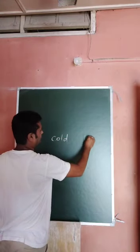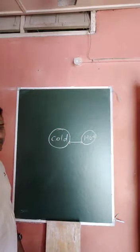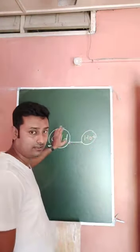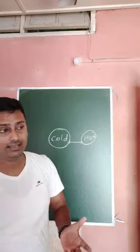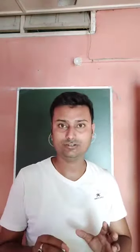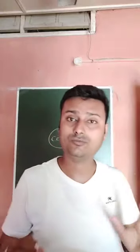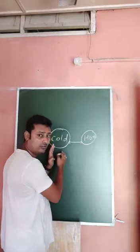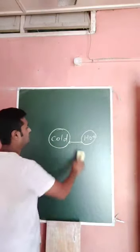Let us discuss. Whenever there are two bodies — one cold and one hot — and these two bodies connect with each other, then heat flows from the higher temperature body to the lower temperature body. Heat is a type of energy, and energy can transform from one state to another. So whenever you connect a hot body and a cold body, temperature flows from the hot body towards the cold one.